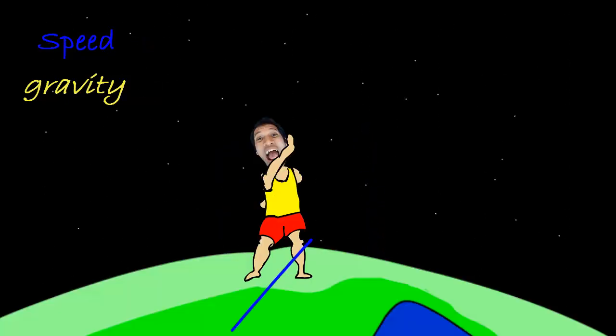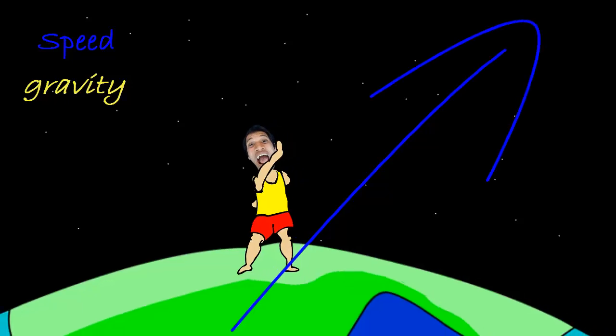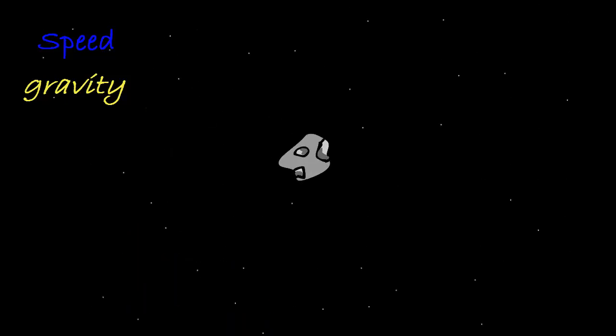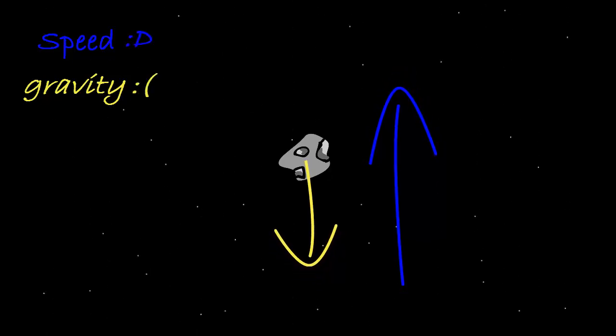But if that stone was given big enough kick, at least 11.2 km per second from earth's surface, then we see something awesome. The speed of the stone decreases, yeah, but gravity also decreases such that the speed would never, ever, ever become zero. Gravity loses, or in other words, the stone has now escaped the gravitational pull of earth.